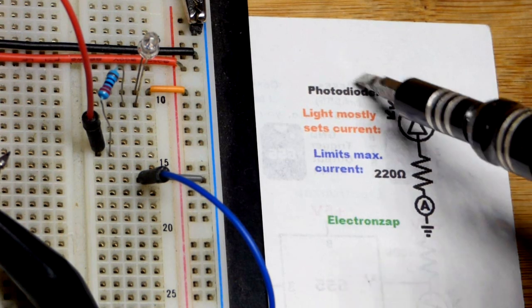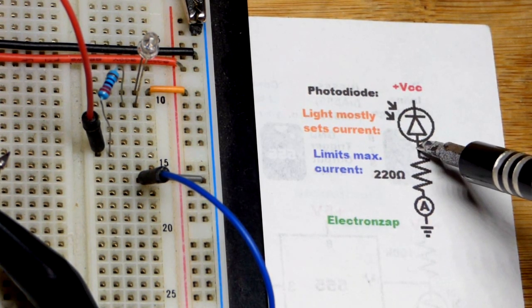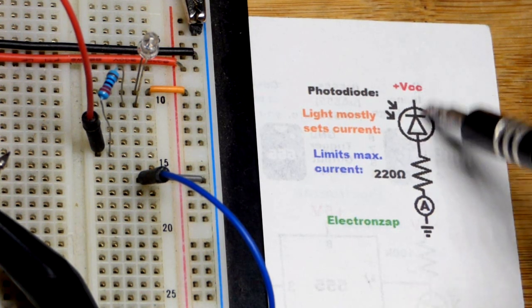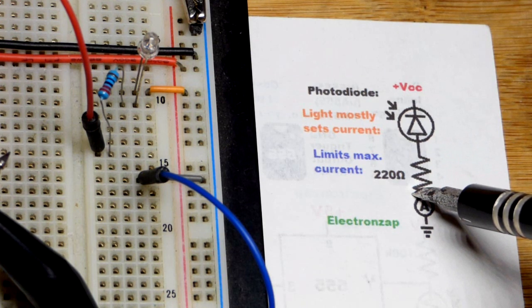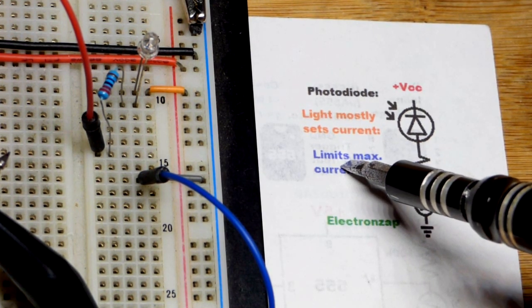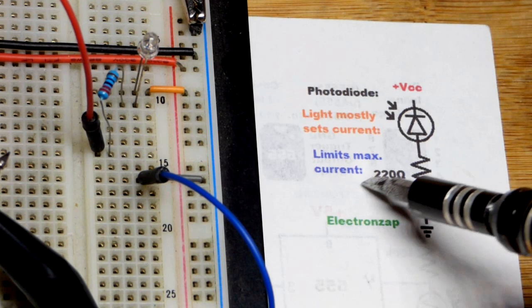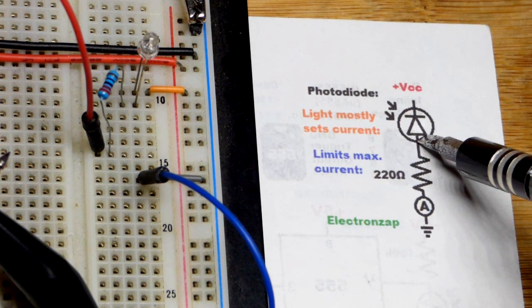When it's reverse biased, depending on how much light is falling on it will determine how much current it allows to pass through. To make sure we don't pass through too much current, we also have a series resistor right there, which we're going to use to limit the maximum current. Anything below the current it wants to set, the photodiode will actually set. So it's just preventing too high of current for the most part.